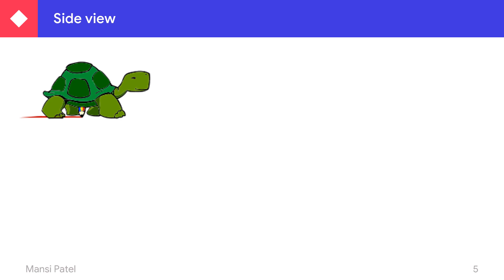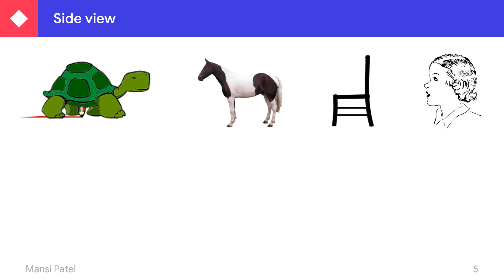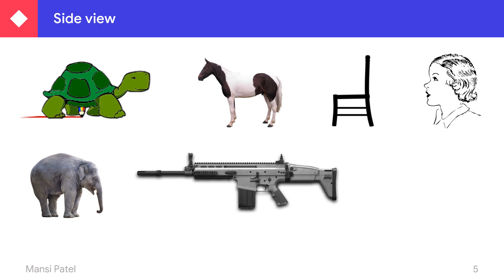Now let us see some more examples of side view. If you want to see the side view, then you have to stand by the side of that object. These are the examples of side view: horse, chair, this is the face of a man. These are the side views of different objects. This is the side view of an elephant. A gun looks like this from the side view. Then this is the side view of a car.